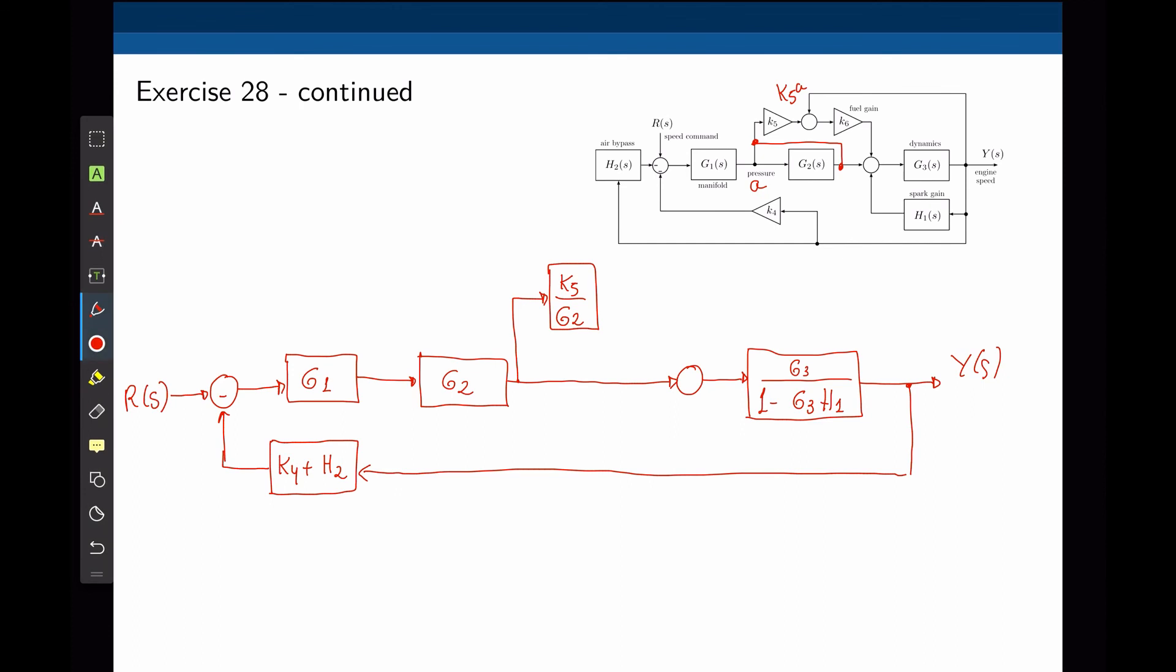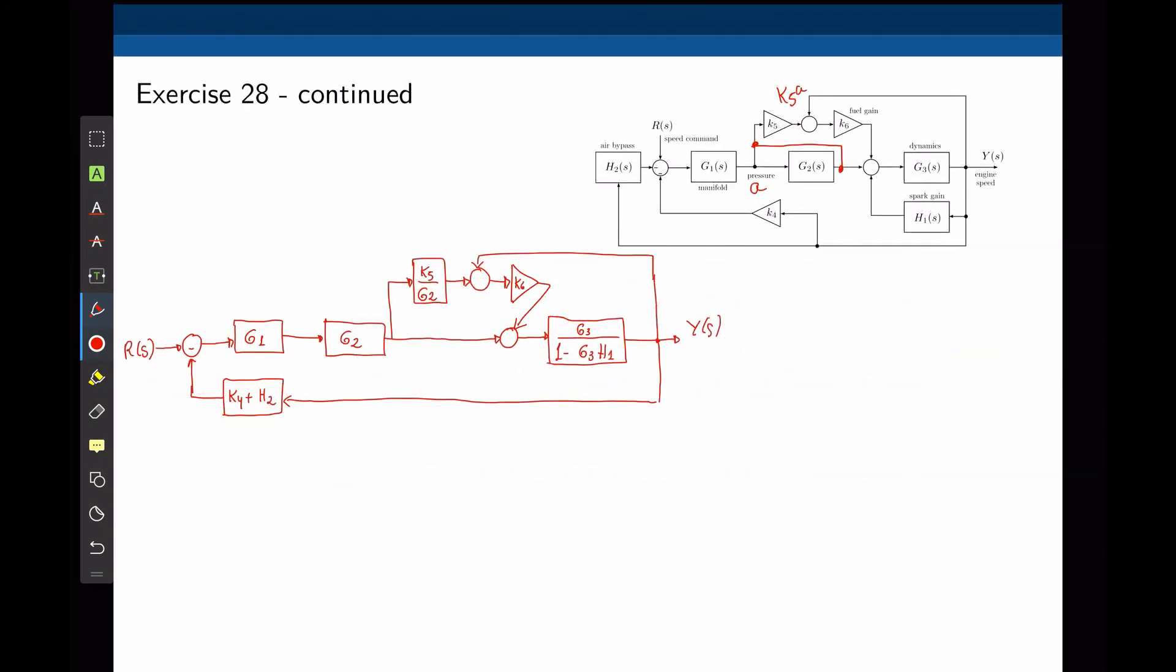So again, if the signal before G2 is A, the signal that comes out of this new block now becomes A times G2 times K5 divided by G2. G2 cancels out and we are back with K5A. So by doing this little maneuver, we keep the same signal flow. And now we can complete the block diagram with the remaining parts. Now we can simplify G1 and G2, starting with the input. We can simply multiply them: G1 times G2.